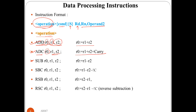SUB is subtract: R1 minus R2 is performed and the result is stored in R0. SBC is subtract with carry: in some cases we need to perform subtraction with carry, which uses two's complement. The instruction is executed as R0 = R1 - R2 - NOT(carry). Please note: the NOT carry symbol is used here, not just carry.